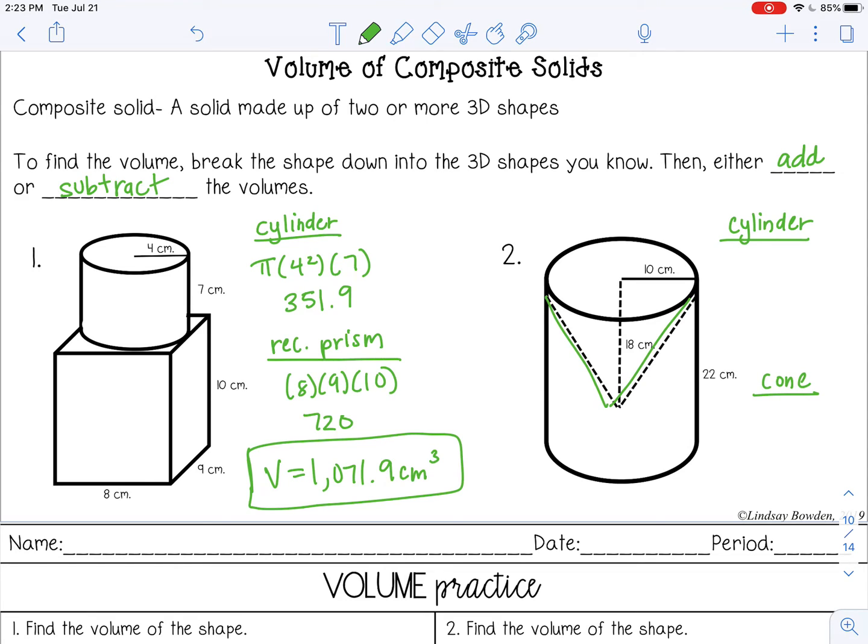So the cylinder is pi r squared h. So pi, here's my radius 10. And here's the height 22, which gives me 6,911.5.